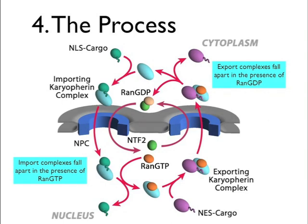In summary, import complexes can only form in the cytosol where RAN-GTP concentration is very low, and those import complexes fall apart in the presence of RAN-GTP. Export complexes, on the other hand, can only form in the presence of RAN-GTP and fall apart when GTP is hydrolyzed — which occurs once the export complexes reach the cytosolic side of the nuclear pore complex, due to the presence of RAN-GAP there.